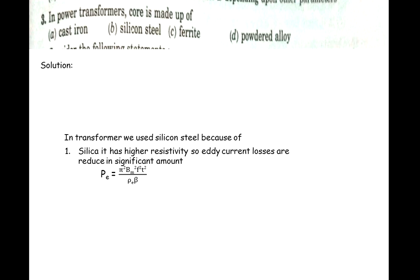Now the third question: in a power transformer, the core is made up of — Option A: cast iron; Option B: silicon steel; Option C: ferrite; Option D: powdered alloy. Now the solution: in a transformer we use silicon steel.